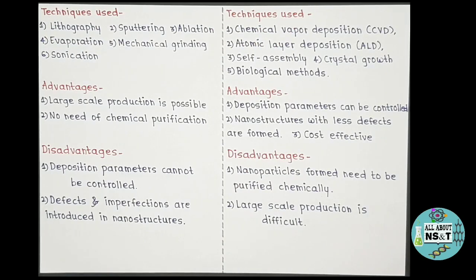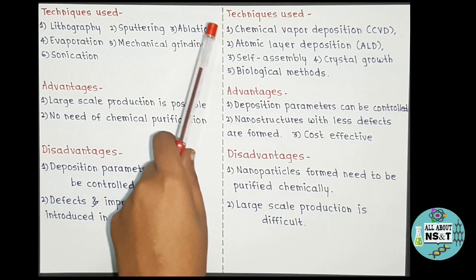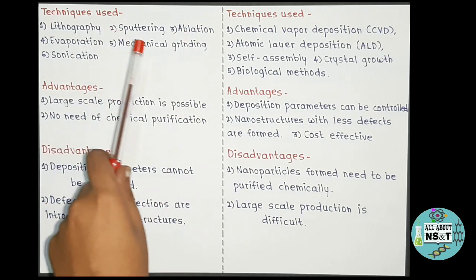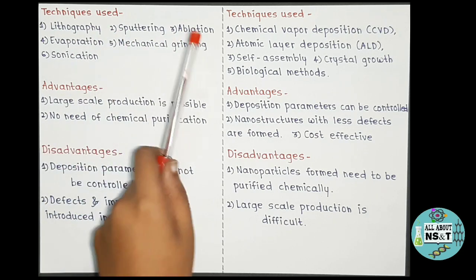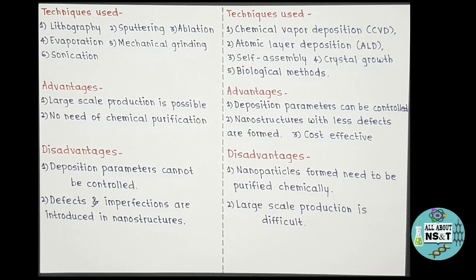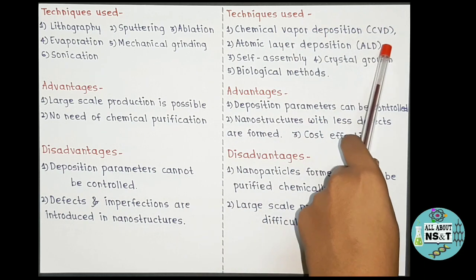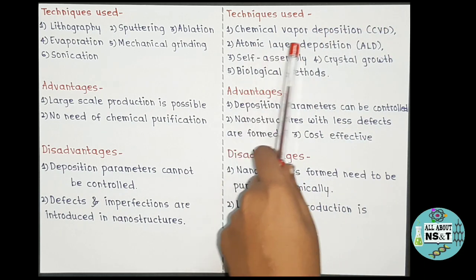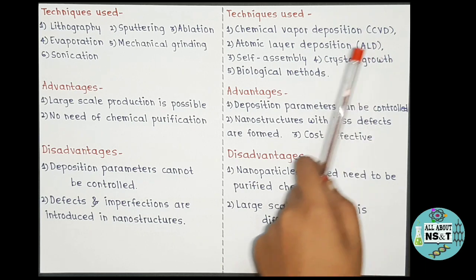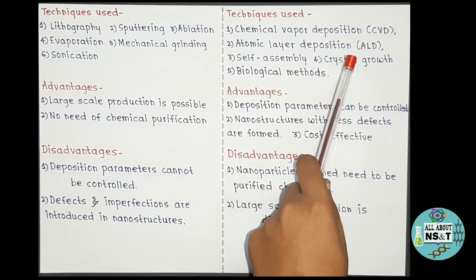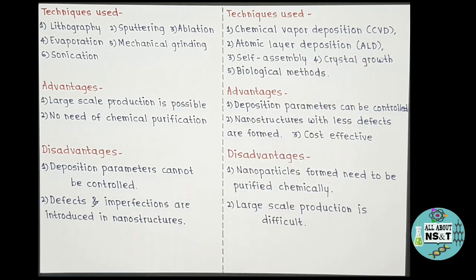Techniques that make use of top-down approaches are patterning methods like lithography, sputtering, ablation, evaporation, mechanical grinding or milling, and sonification. Techniques that make use of bottom-up approaches are chemical vapor deposition (CVD), atomic layer deposition (ALD), self-assembly, crystal growth, and biological methods.